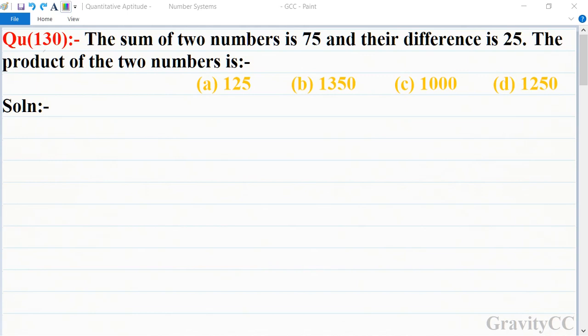Quantitative aptitude, chapter number system, question number 130: The sum of two numbers is 75 and their difference is 25. The product of the two numbers is? In this question, first of all let the two numbers be x and y.